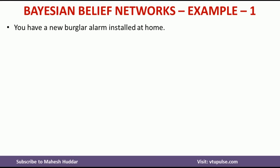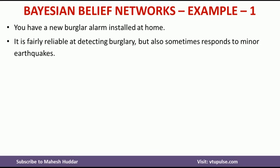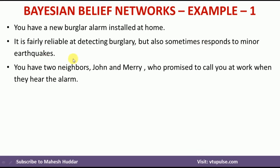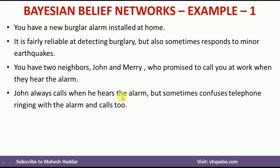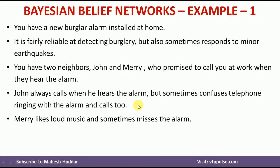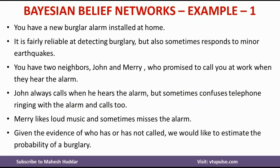This is the problem definition. You have installed a new burglar alarm system at your home. The burglar system works fairly reliably at detecting burglary, but sometimes responds to minor earthquakes. You have two neighbours, John and Mary, who have promised to call you at work when they hear the alarm. John always calls when he hears the alarm, but sometimes confuses the telephone ringing with the alarm and calls too. Mary likes loud music and sometimes misses the alarm. Given the evidence of who has called and who has not called, we would like to estimate the probability of burglary in the home.